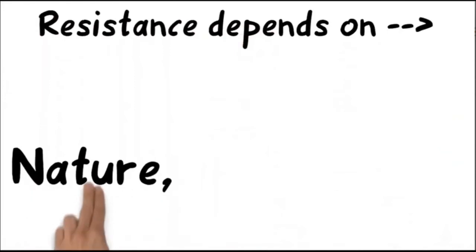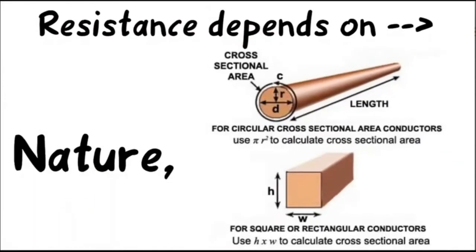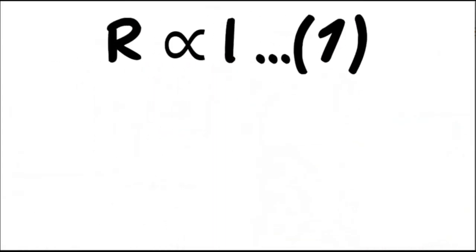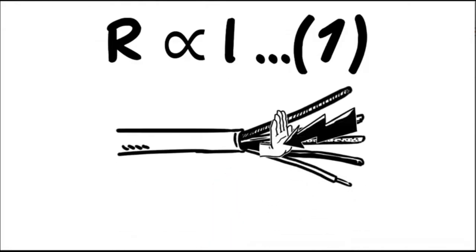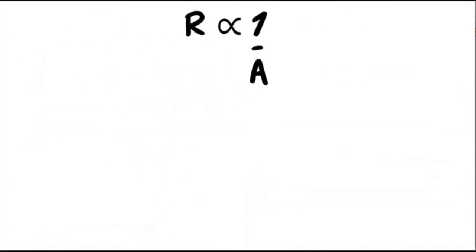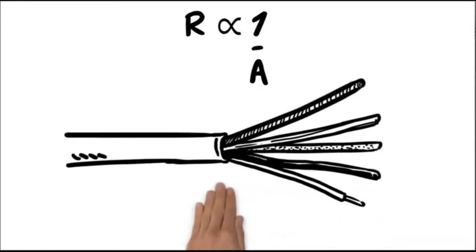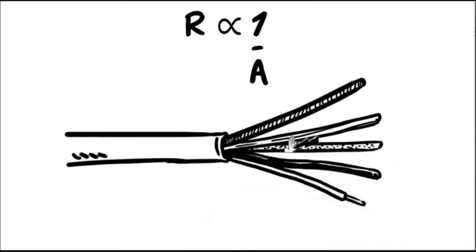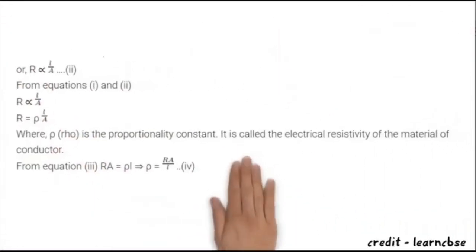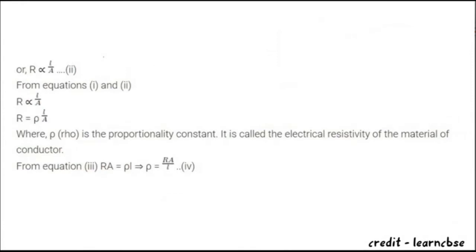Resistance in a conductor depends on nature, length, and area of cross-section of the conductor. Resistance R is directly proportional to the length of the conductor — this is why long electric wires create more resistance. Resistance R is inversely proportional to the area of cross-section A of the conductor — this is why thick copper wire creates less resistance. Thus R is proportional to L by A. This gives R equals rho (ρ) into L by A, where rho is the proportionality constant called electrical resistivity.